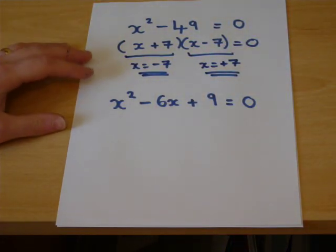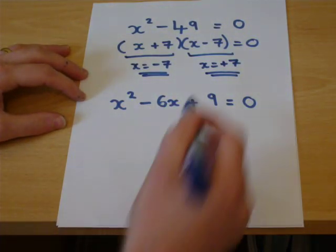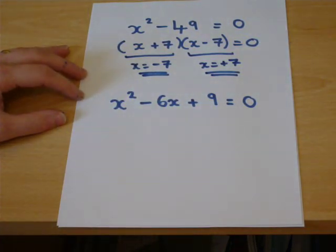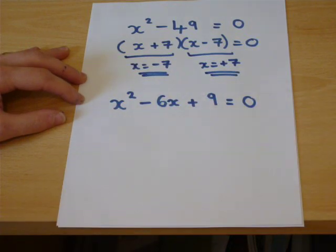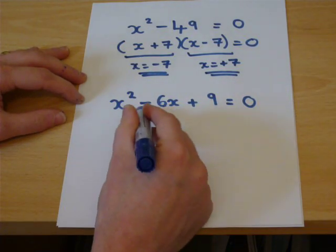And the final one in this particular series is this one here. When we have a plus 9 here and a minus term here. Now then, this is actually a square number. 3 times 3. And also 3 plus 3 is 6. But we have a minus 6 here.